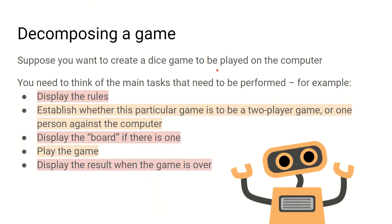You might want to think about how we decompose a game or a program. Let's say we're creating a dice game program. When breaking it down we want to think about the main tasks needed to make this game work: how do we display the rules? How do we establish whether the game is two player or one player? How do we display the board if we have one? How do we actually initiate playing the game, and how do we display the results when the game is over? These are a few things to think about when breaking down the task of making this dice game.